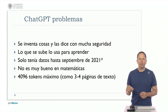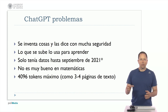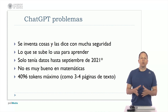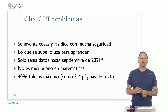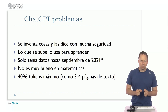Let's go back to the presentation to see what the problems are. The first one we've already mentioned: ChatGPT makes things up because it doesn't truly understand what we say — it's a mathematical tool that predicts words. It predicts them with a lot of confidence, but if we don't know what it's talking about, it can slip in things that are completely false. Sometimes it invents bibliographic references. This is what is known as hallucinations.